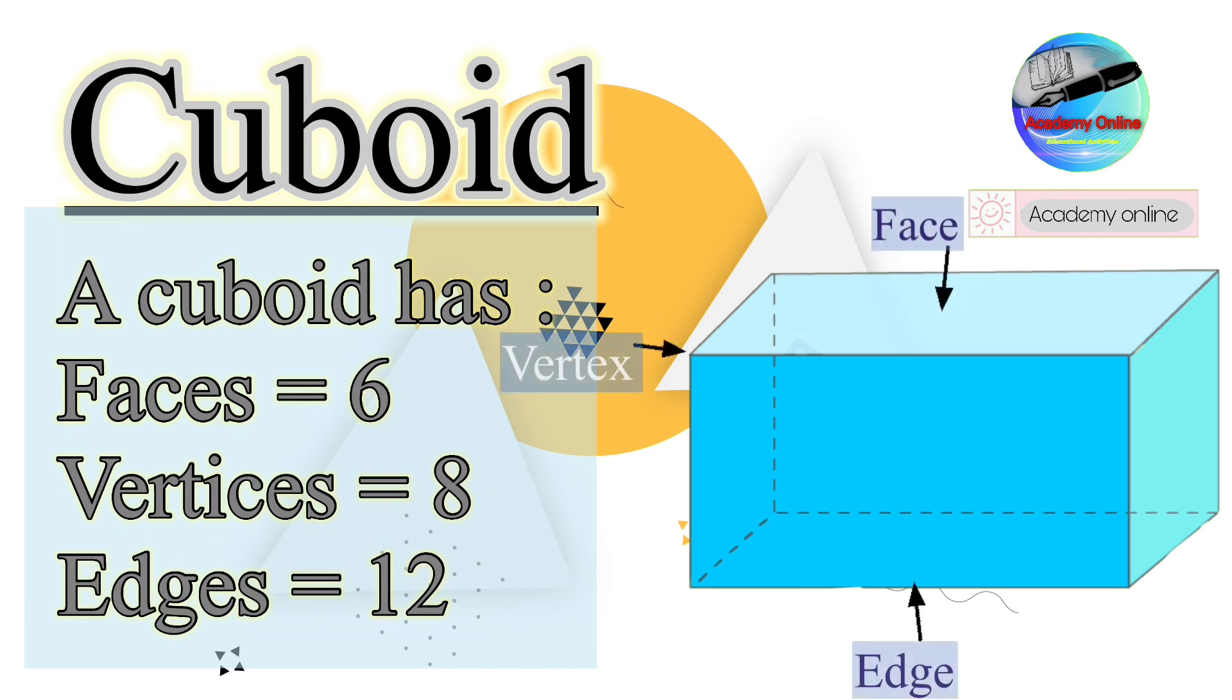A cuboid has six faces, eight vertices, and twelve edges.